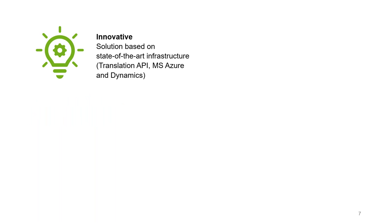What are the features of FM Online? First, the solution is innovative — it's based on state-of-the-art infrastructure including a translation API which supports 110 different languages, Microsoft Azure cloud to provide the cloud service for the web application, and Microsoft Dynamics which is the core database. This infrastructure provides very low internet latency and global scalability regardless of where you are.